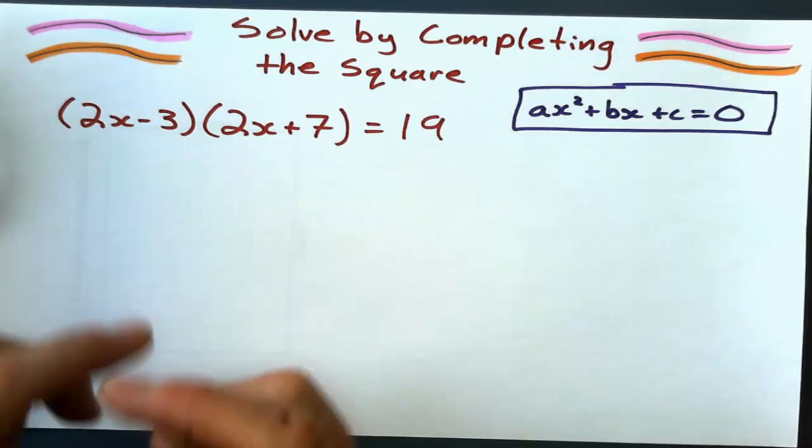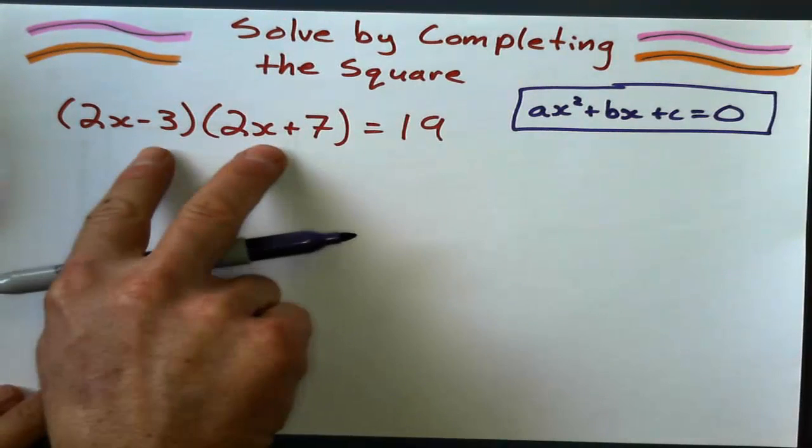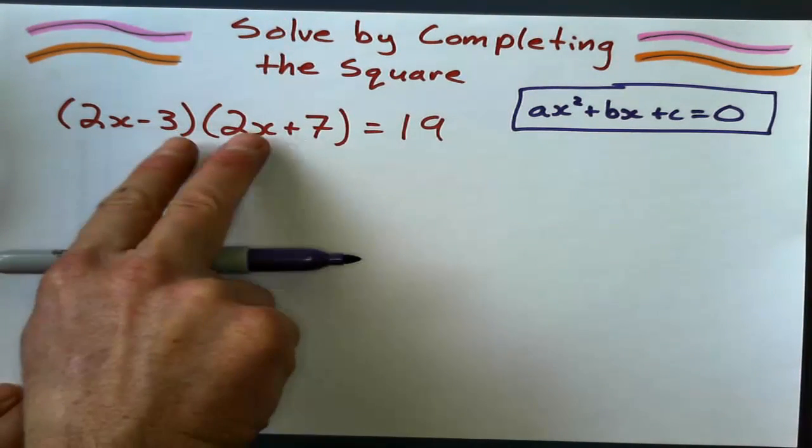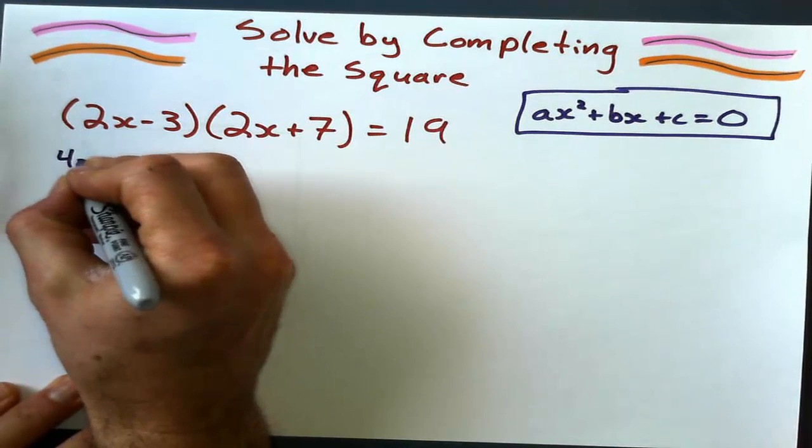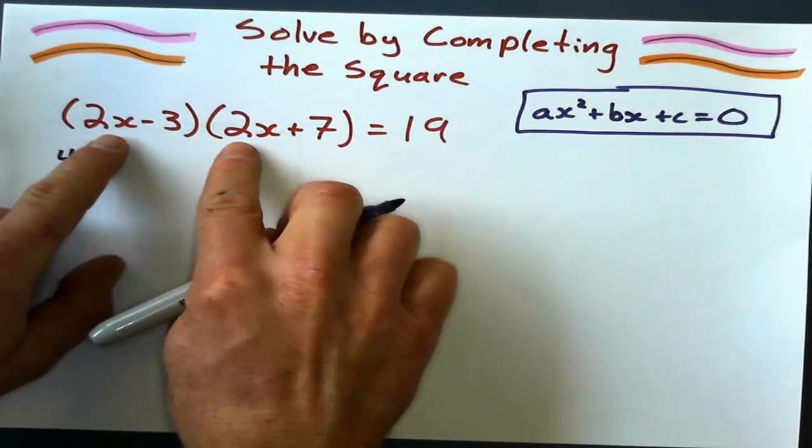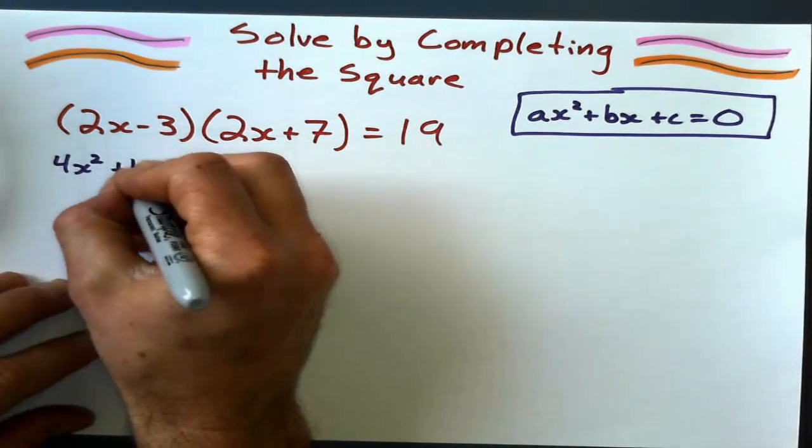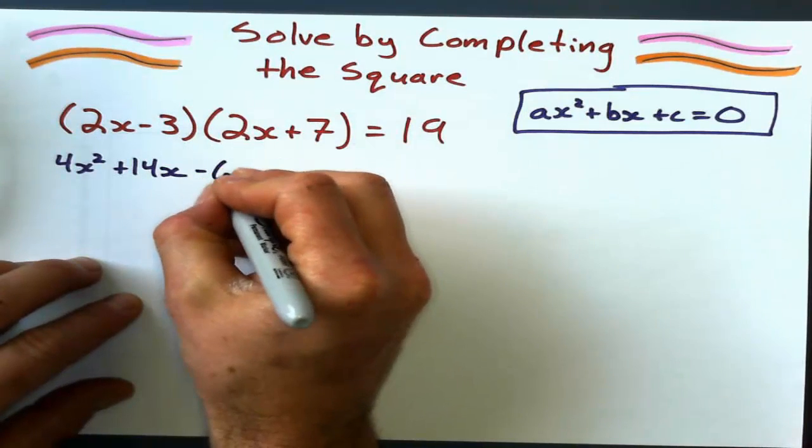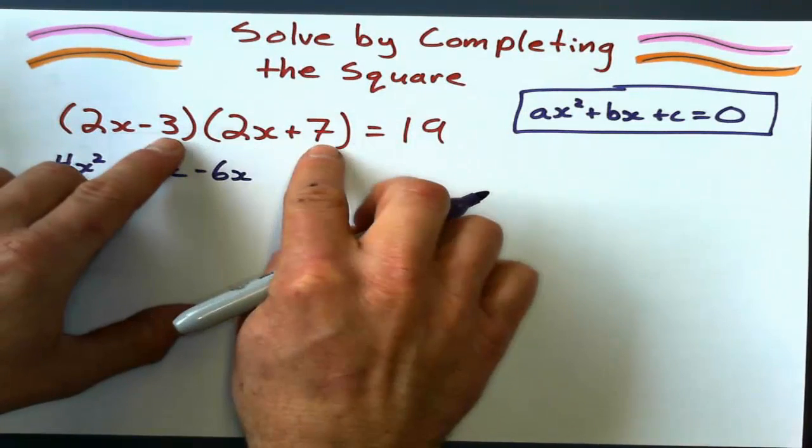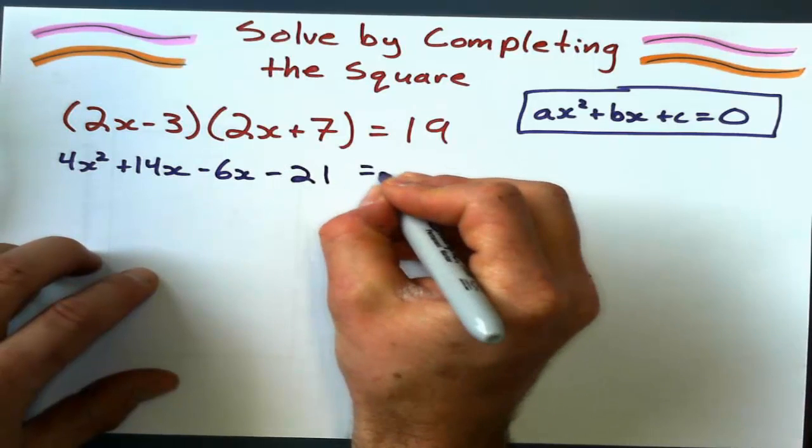So my first step here is get rid of the brackets and expand this out. And I'll do the first, outside, inside, last thing. The first is 4x squared, outside is plus 14x, inside is minus 6x, and the last is minus 21.